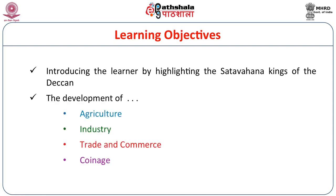Another part covers the development of agriculture, industry, trade and commerce, and coinage. When agricultural production becomes surplus, it comes through the channels of trade and commerce to others. When trade and commerce develop, coins are required to facilitate those activities. Coins are metallic pieces which guarantee the movement of goods and other exchanges. We have taken coinage into account as part of economic activities under the Satavahanas.